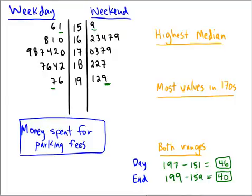Next, which group has the most values in the 170s? The 170s would have a stem of 17. For the weekend, there are 4 values in the 170s. For the weekdays, there are 6 values in the 170s. So the group with the most values in the 170s is the left-hand side, which is the weekday.